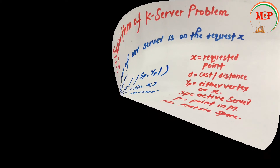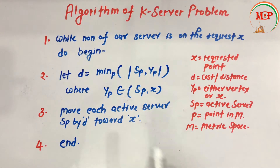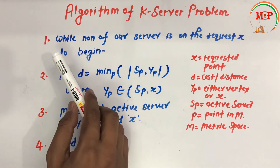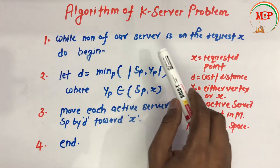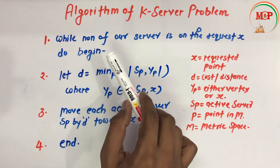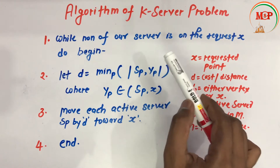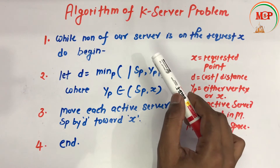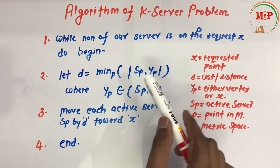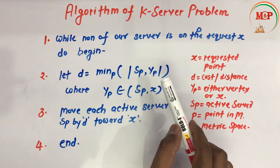Now let's see another approach to solve the k-server problem — another algorithm. The first step is: while none of our servers is on the request point x, do begin. This means: if all our servers are free and none is currently serving a request, we start this algorithm. Let d equal minimum over p of d(sp, yp).